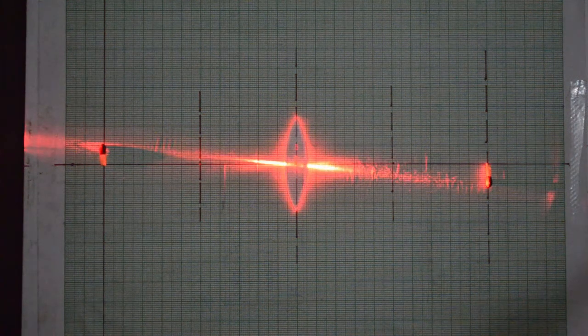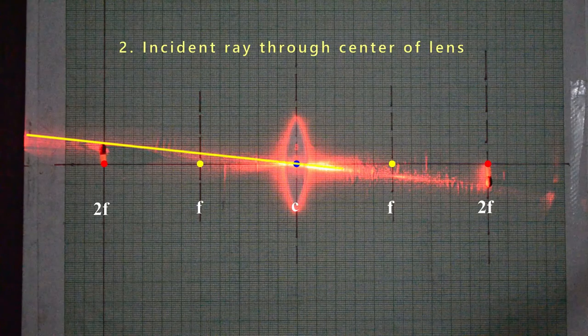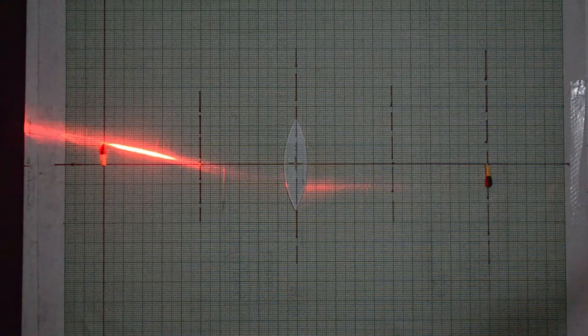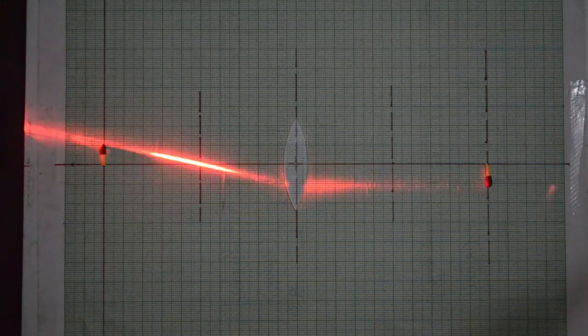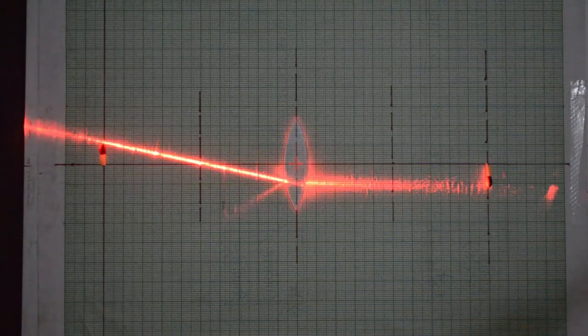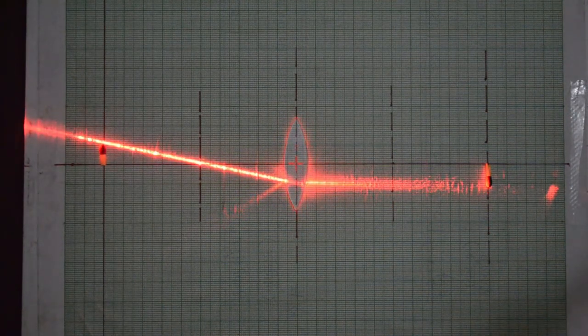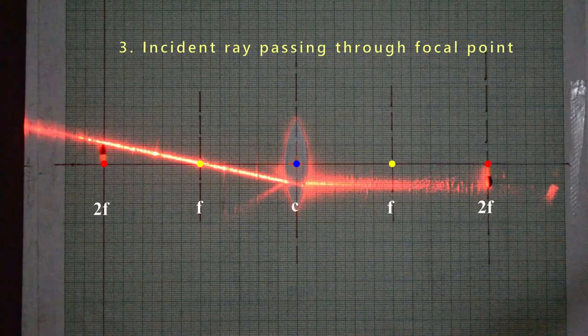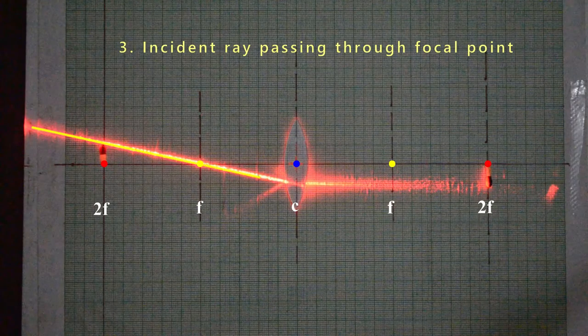As per the second rule, an incident ray that passes through the center of the lens will continue its path. As per the third rule, any incident ray traveling through the focal point on the way to the lens will refract through the lens and travel parallel to the principal axis.